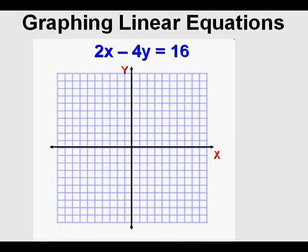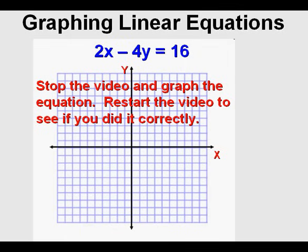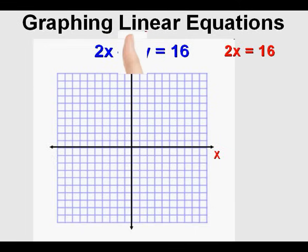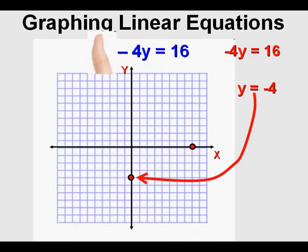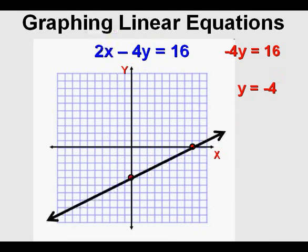Let's look at this one: 2x minus 4y equals 16. Stop the video, graph the equation, then restart to see if you graphed it correctly. First, cover the y-term so that 2x equals 16 remains. Dividing by 2, x equals 8. Mark that x-intercept of 8 on the x-axis. Cover the x-term and we have negative 4y equals 16. Dividing both sides by negative 4, the y-intercept is negative 4. Mark it and draw the line through the two points. This is the graph of 2x minus 4y equals 16.